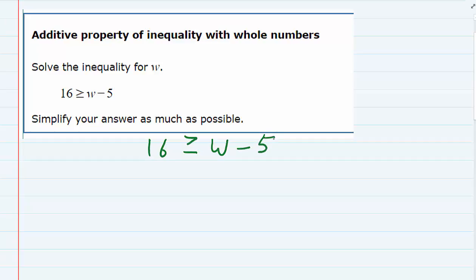So just like with equalities, to solve it means to get the variable by itself. And the variable is almost by itself except it has that minus 5. So we can get rid of the minus 5 by adding 5.